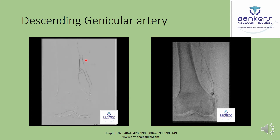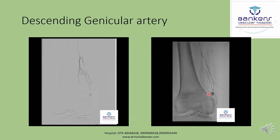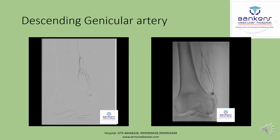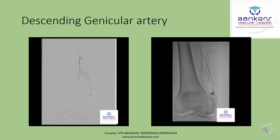These are the descending genicular artery — the first artery supplying the medial side of the knee joint. You can see the markers positioned here, and the branches of this descending genicular artery pass through these pain-producing sites. However, there is no hypervascular artery here, so this artery is not participating in the inflammatory reaction at the pain-producing sites.